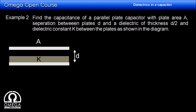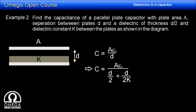In the next example, instead of the entire region, only half the width of the capacitor is filled with dielectric. The capacitance formula is still A·epsilon_0 over D, but the effective distance changes. The electric field travels D over 2 in the medium of dielectric constant K, which is equivalent to D over 2K in air. For the remaining half of the distance, the electric field is already in air, so its equivalent distance remains D over 2. Thus, the capacitance is A·epsilon_0 divided by (D over 2 plus D over 2K), which simplifies to 2·A·epsilon_0·K divided by D·(K plus 1).